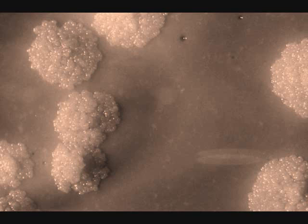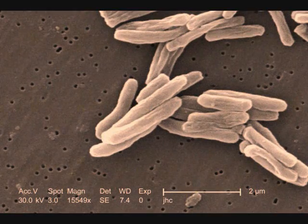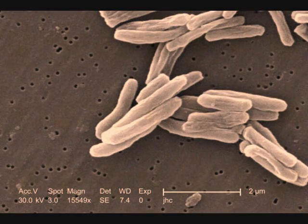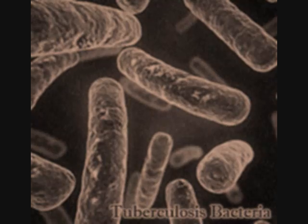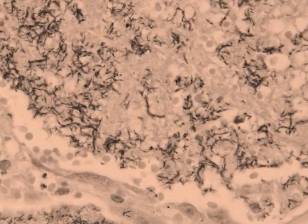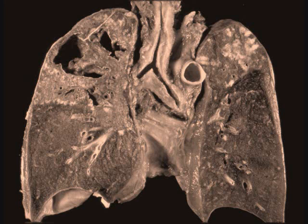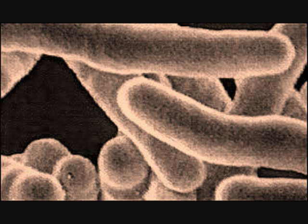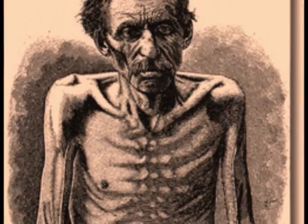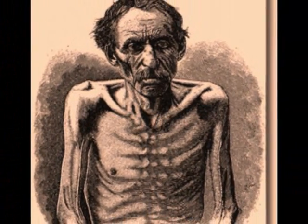Tuberculosis, most often referred to as TB, is a widespread infectious disease which can prove to be lethal, resulting most commonly in humans from a strain of bacteria called Mycobacterium tuberculosis. It most often attacks the lungs but can also affect other parts of the body. This deadly disease must not be ignored. If you don't recognize the symptoms or know how to prevent it, TB will kill you quickly and efficiently.